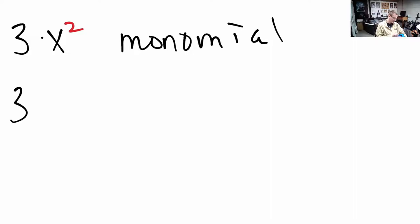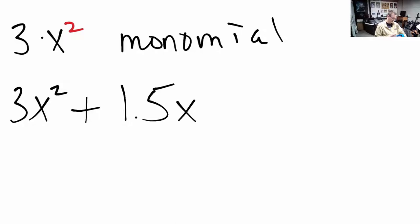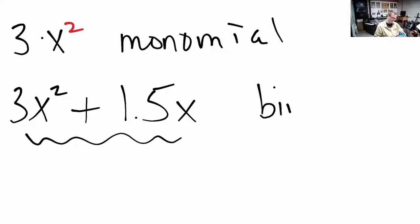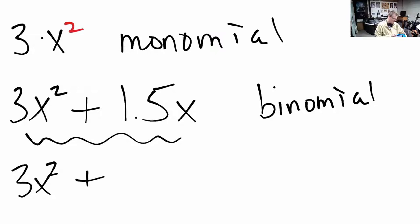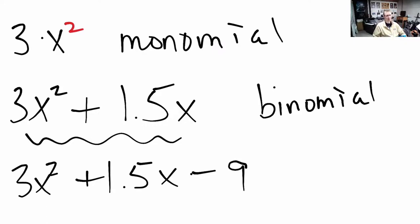I could take this and add to it another variable. Maybe instead of X squared, we'll add in 1.5X. Now we've got a sum in here separating these two terms. This is what we call a binomial. A trinomial, as you can guess, is just another one added. So we've got 3X squared plus 1.5X minus 9. Here we've got a trinomial.